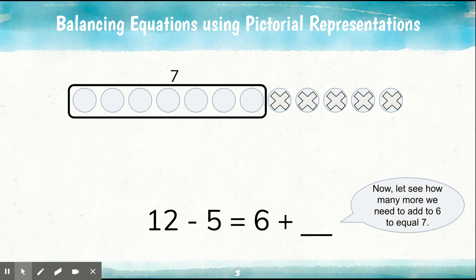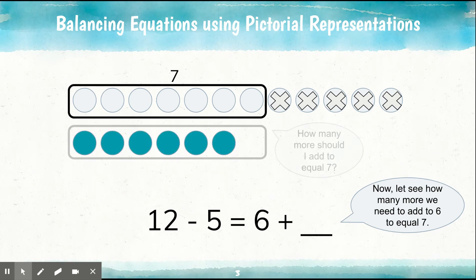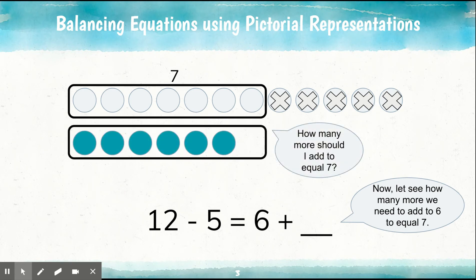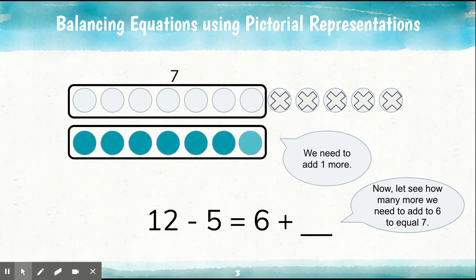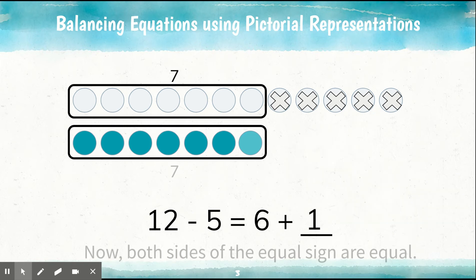There are 7 left. Now let's see how many more we need to add to 6 to equal 7. So here's 6. How many more should we add to equal 7? Right, we need to add one more. So 12 minus 5 is equal to 6 plus 1. Both sides of the equal sign are equal. This is a balanced equation.